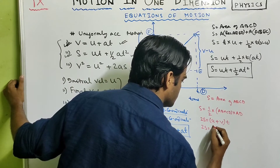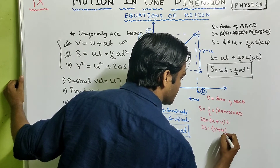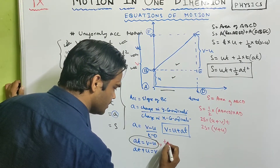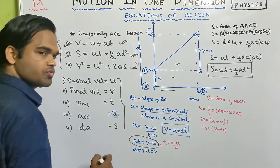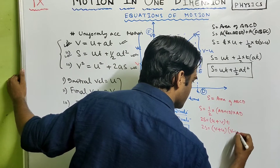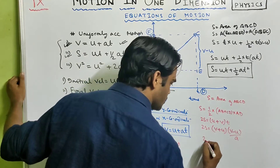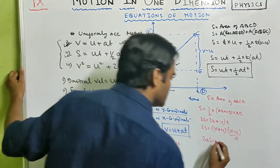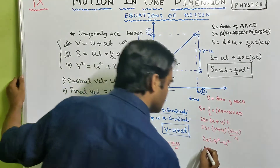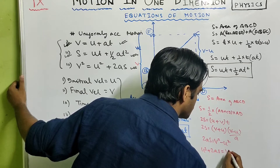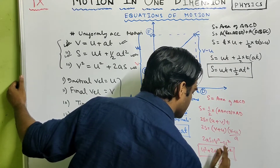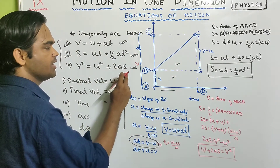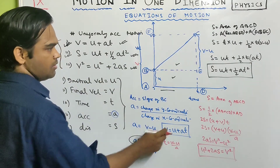So 2s equals (u plus v) times t. From the first equation, t equals (v minus u) divided by a. Substituting, 2s equals (v plus u)(v minus u) divided by a, so 2as equals v squared minus u squared. Rearranging: u squared plus 2as equals v squared. That is the third equation of motion.